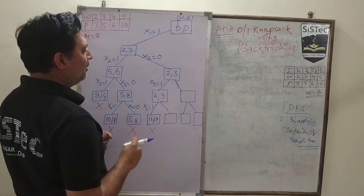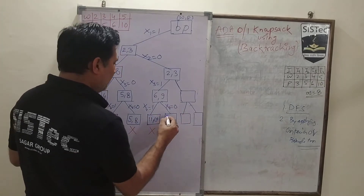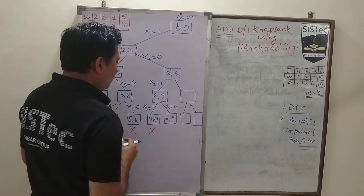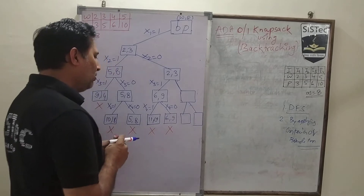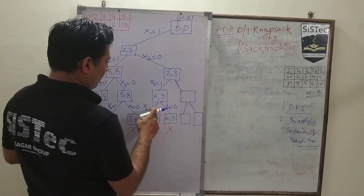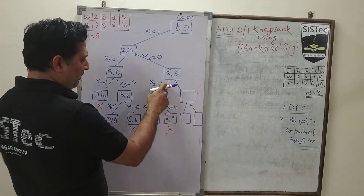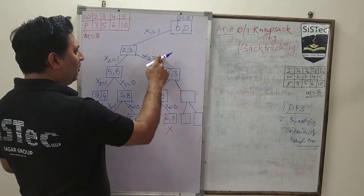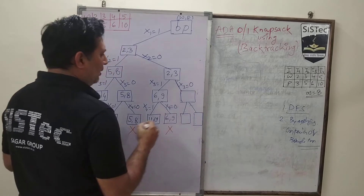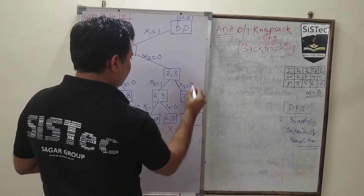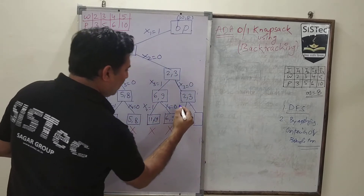Again we have exceeded the capacity, so we will not consider this. No more weight is left and we don't reach the full capacity, so this is also not a valid solution. After not considering 4, we consider 3 and backtrack to the previous node. After rejecting 2, we discard 3 as well and have the same values. So considering 1, not considering 2, not considering 3, we will consider the 4th weight.